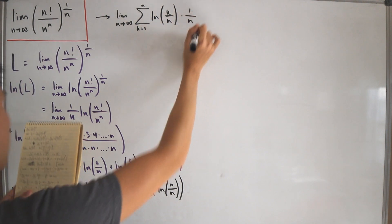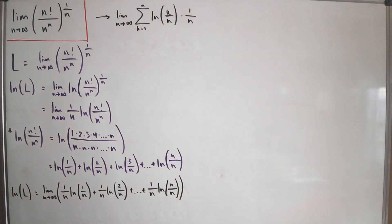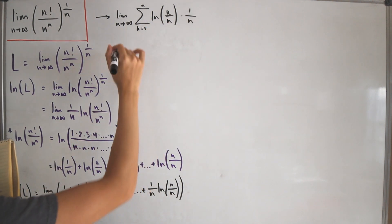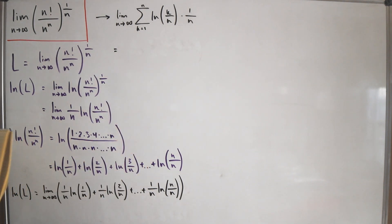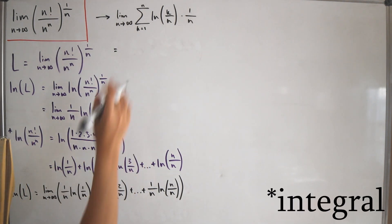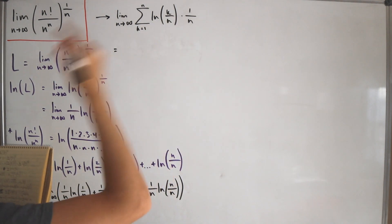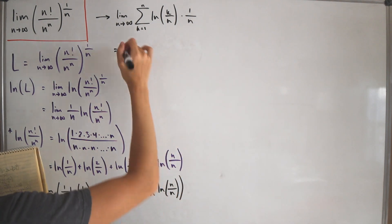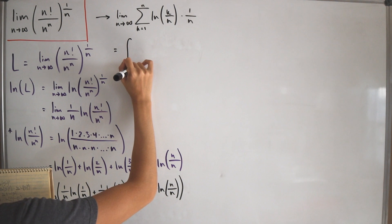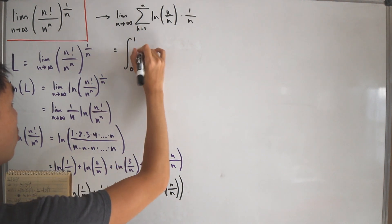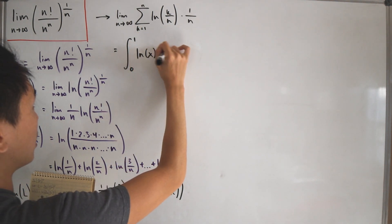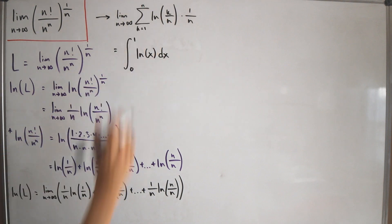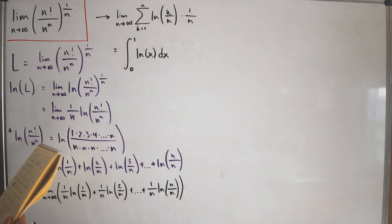If you observe this carefully, you'll notice this can be written in terms of the definition of a Riemann sum. Choosing our bounds and function carefully, and utilizing the definition of the Riemann integral, everything can be written as the definite integral from 0 to 1 of the natural log of x dx. Using that definition, these two are the same thing in terms of a limit.